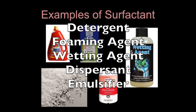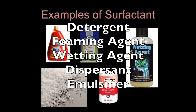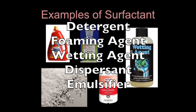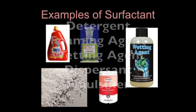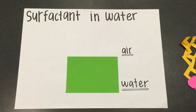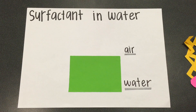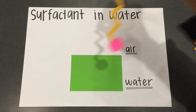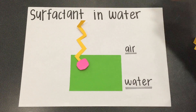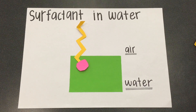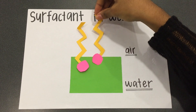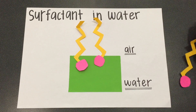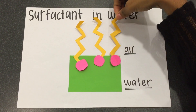These are the examples of surfactants. How does surfactant work in water? The hydrophobic tail stays out towards the air, and the hydrophilic head is attracted to the water molecules.